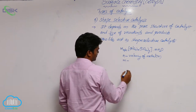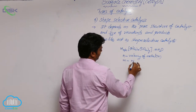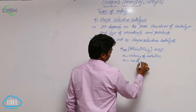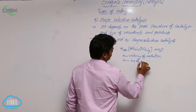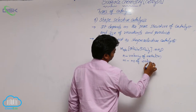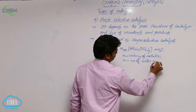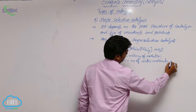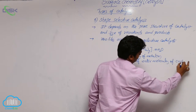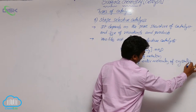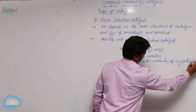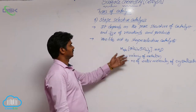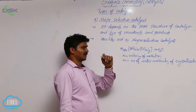And m is the number of water molecules of crystallization. So this is the formula of zeolites.